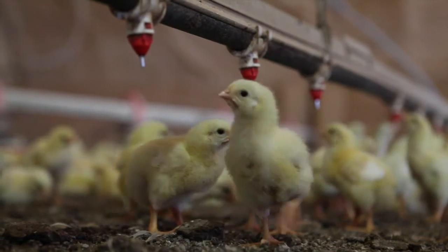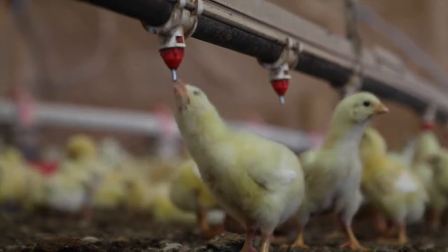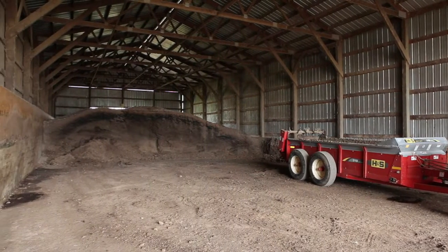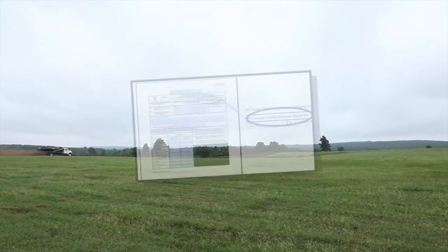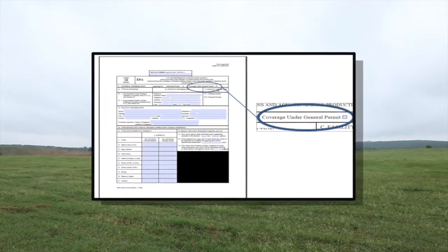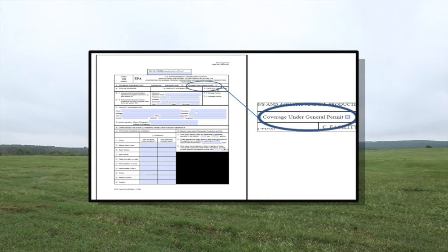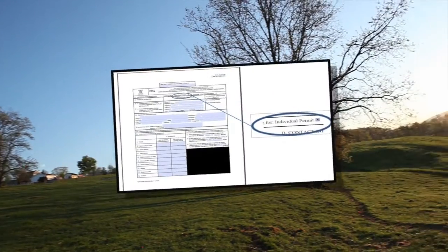Additional information required on the Notice of Intent may include the type and number of animals raised, animal confinement methods, manure generation volumes, manure handling and storage structures. Although the process will vary from state to state, once the Notice of Intent and additional required documents are submitted, the regulatory agency will provide a public notice of a facility's request for permit coverage. The public notice allows individuals a specific length of time to review the NOI and accompanying documents, submit comments that pertain to the permit, or request a public hearing. Generally, if the information submitted is correct and the additional required documents are in order, the permit coverage request will be approved.